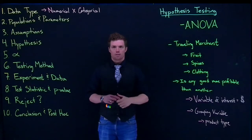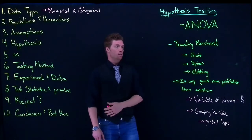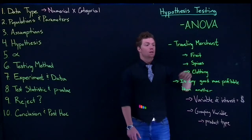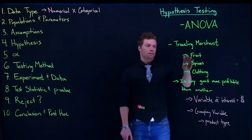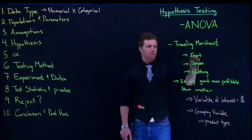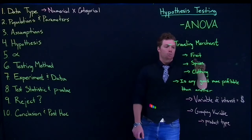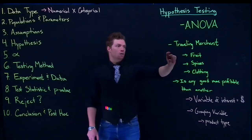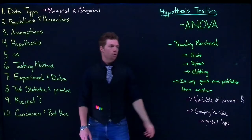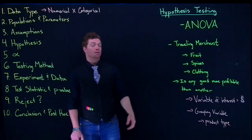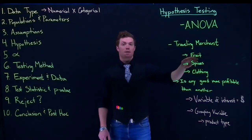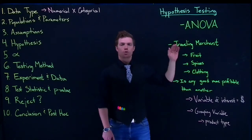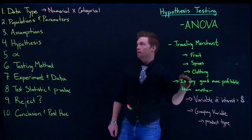The populations that we're interested in — we've got three different populations. We've got the true population amount of money that you make when you sell fruit, the true population for spices, and the clothing. So our populations are all the fruits, all the spices, all the clothing. The parameters we're interested in are the true mean amount of money that we get when we sell fruit, the true mean for spices, and the true mean for clothing.